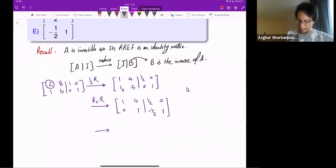And now this is the next leading one, it's in the right place. I have to get rid of that one, so row one minus four times row two. This will give me [1 0 | ? ?].